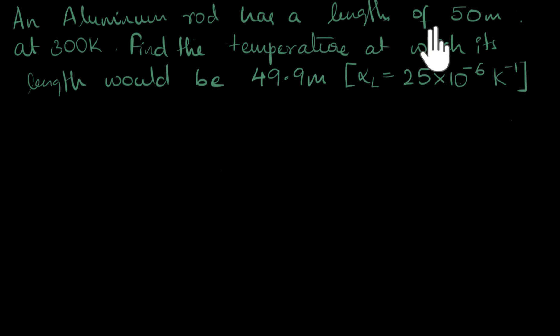An aluminum rod has a length of 50 meters at 300 Kelvin. Find the temperature at which its length would be 49.9 meters, given the alpha L value, the linear expansion coefficient of aluminum, is 25 times 10 to the minus 6 Kelvin inverse.